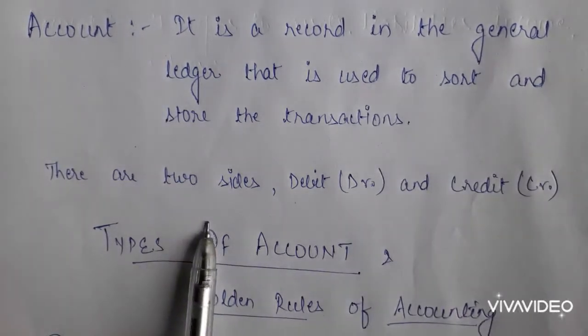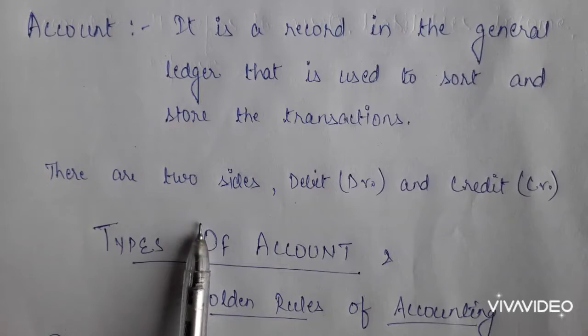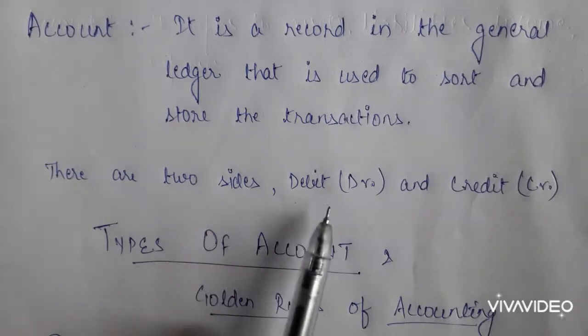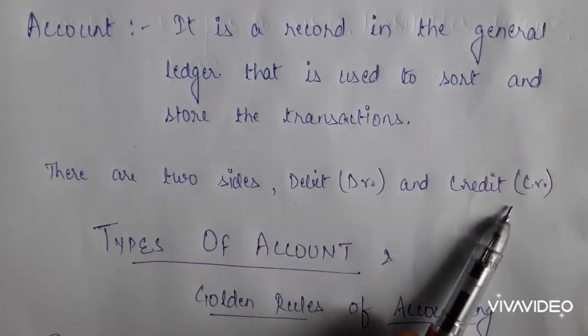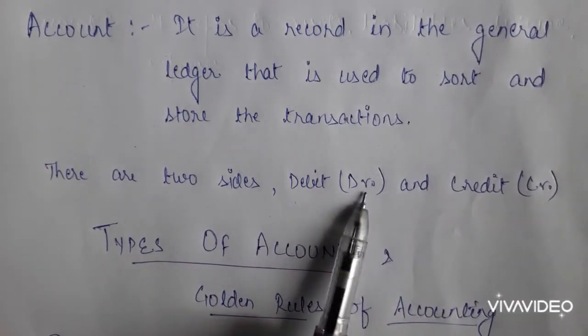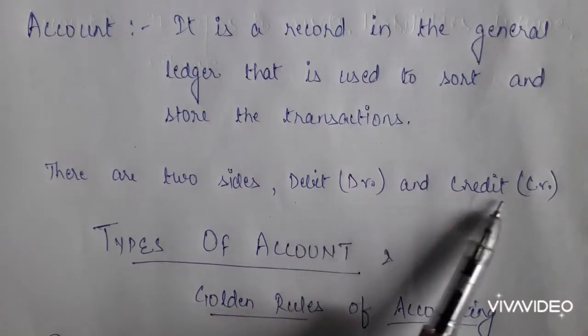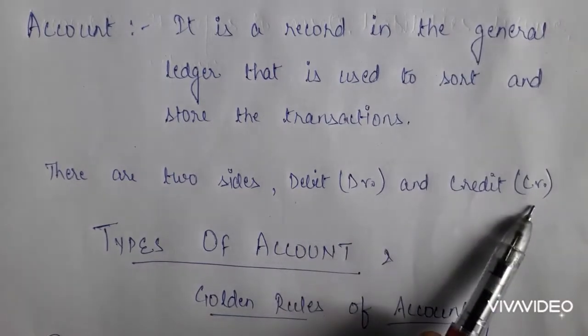In every account we have two sides: one is debit, written as Dr., and the other one is credit, written as Cr.